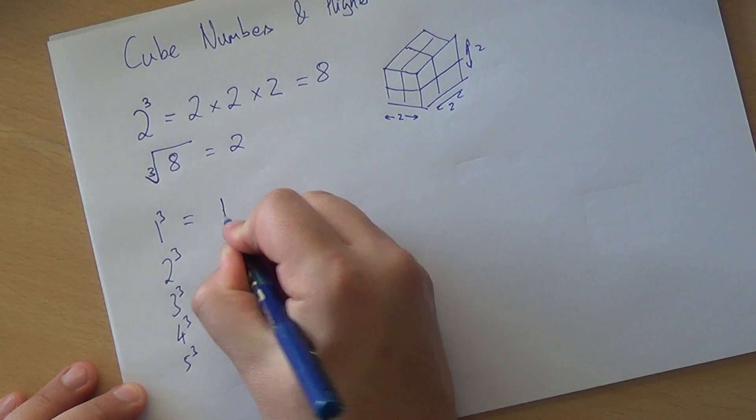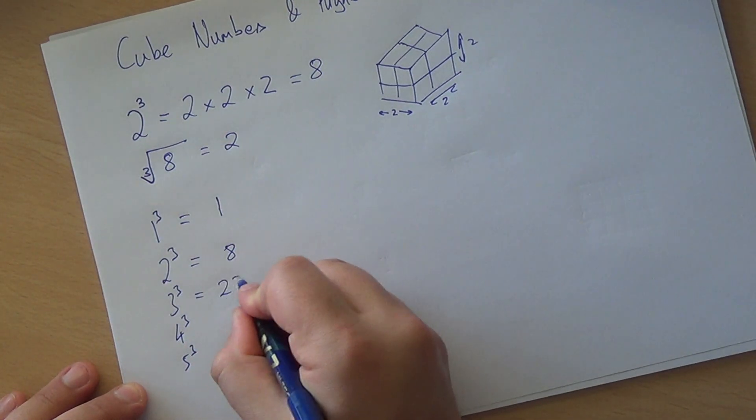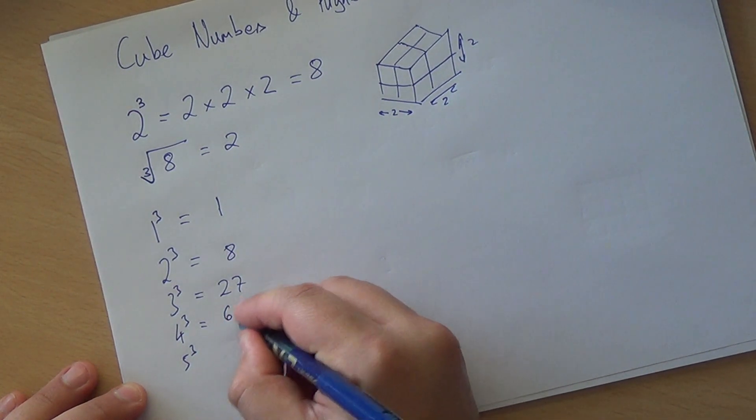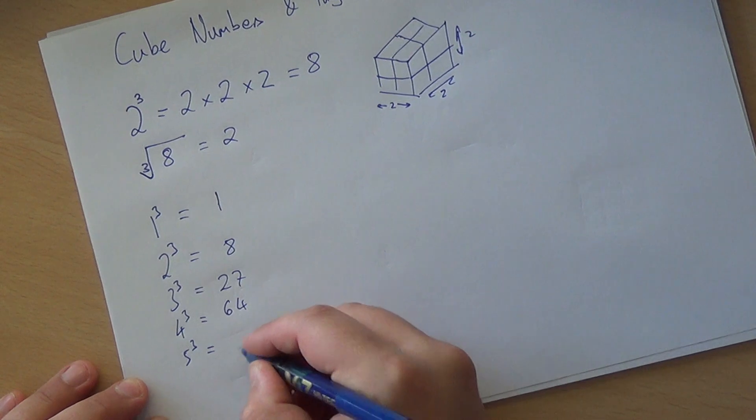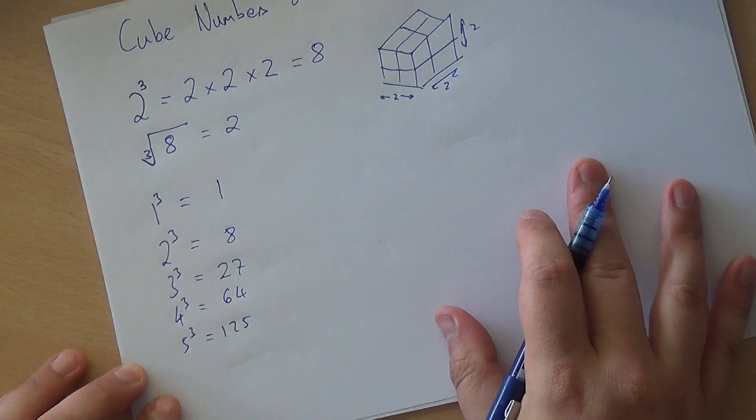1 times 1 times 1 is 1. 2 cubed is 8. 3 times 3 is 9, times 3 again is 27. 4 times 4 is 16, times 4 again is 64. 5 times 5 is 25, times 5 is 125. So that list is meant to be something that's memorized by a UK student.